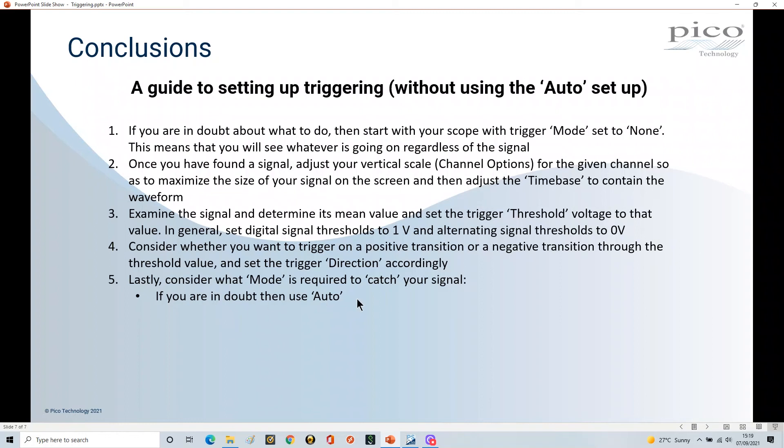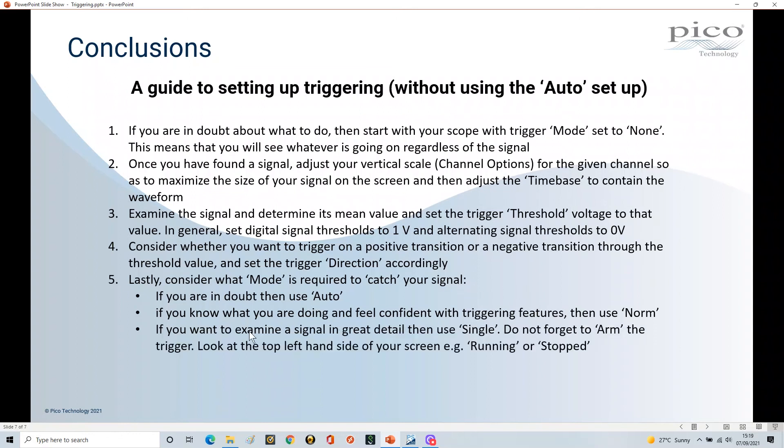So how do you want to catch the signal? If you're in doubt then use auto. If you know what you're doing and feel confident with triggering features then use normal. And if you want to examine a signal in great detail then use single. Now remember in the demonstration we're doing in these videos, because I was in charge of the transmission of the signal, then of course single or normal works very well.